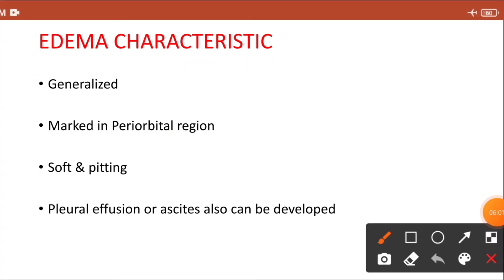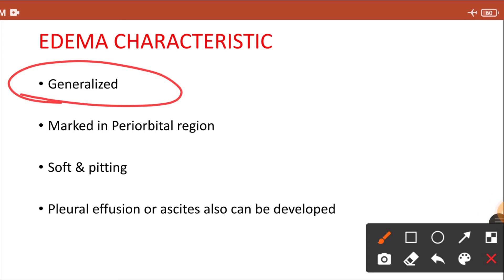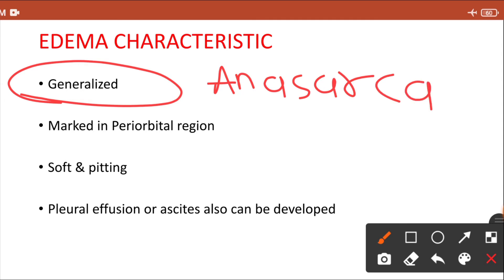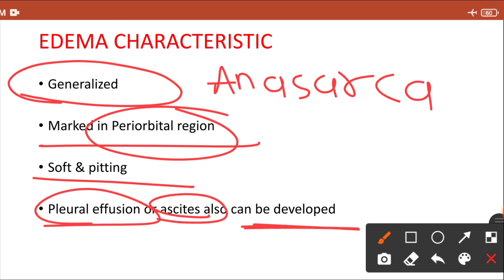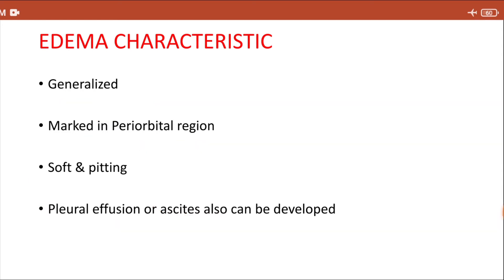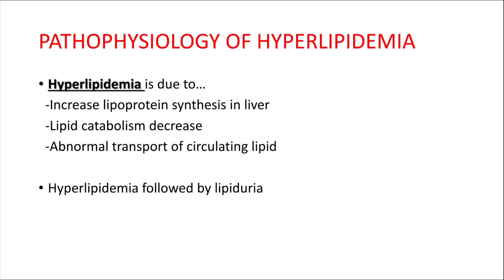The edema in nephrotic syndrome is generalized, known as anasarca. Initially the patient has edema in the periorbital region, but it can appear over the legs and the whole body. The edema is soft and pitting in variety. In severe cases, pleural effusion — collection of fluid in the pleural cavity — and ascites — collection of fluid in the peritoneal cavity of the abdomen — can also develop.